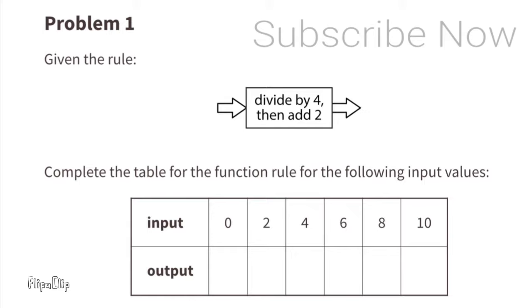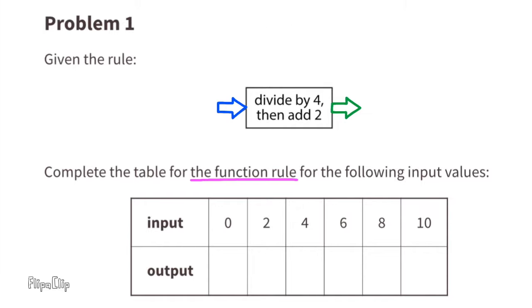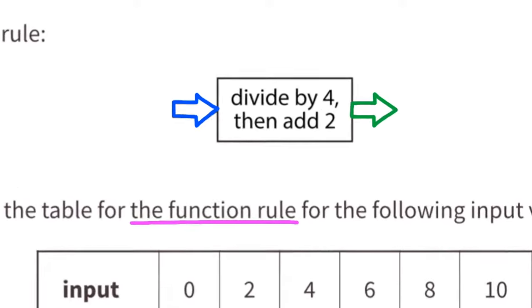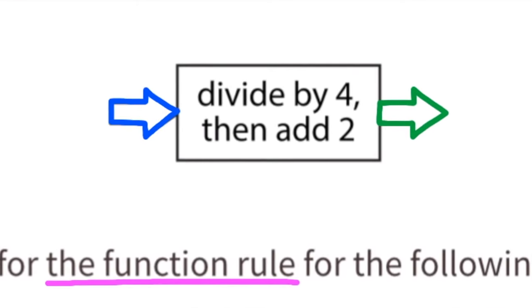Given the rule, complete the table for the function rule for the following input values. First let's look at the function rule. The function rule is: divide by four, then add two.